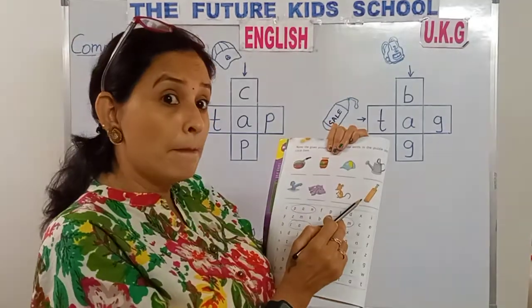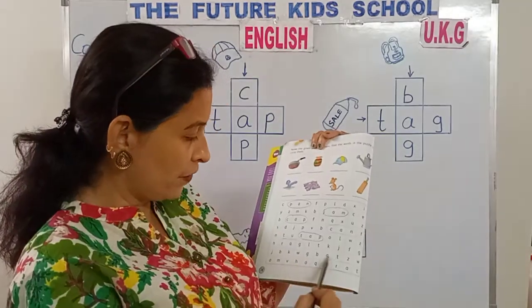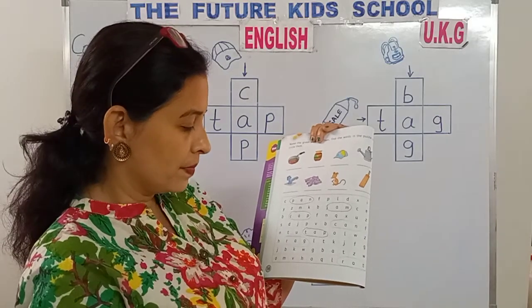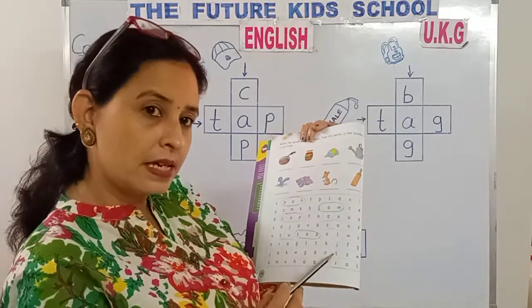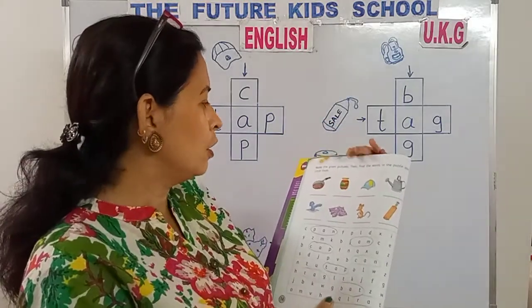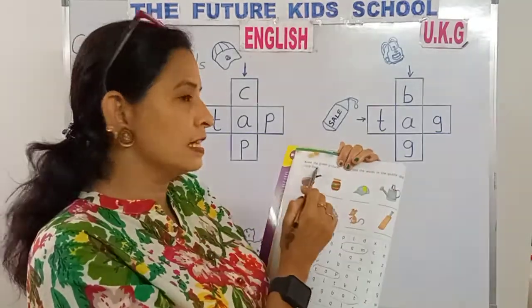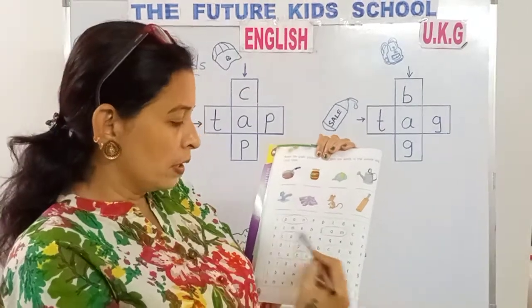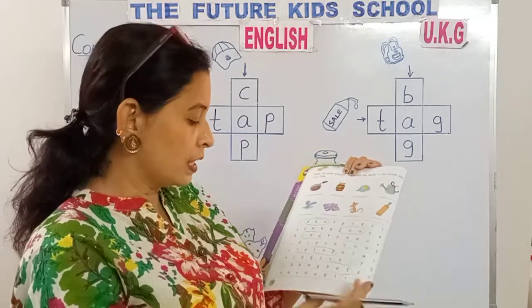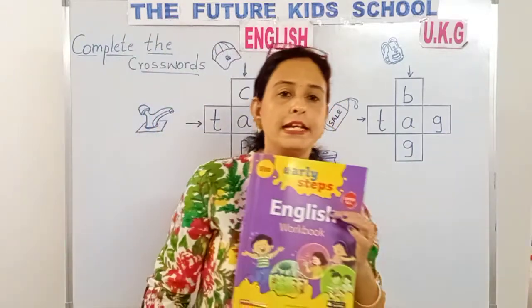This is a bat. B-A-T. Bat. Now look here — if we can find the word bat, look at the letters. Yes, here it is. B-A-T. Bat. Circle it. So, we need to name the given pictures, find the word in the puzzle, and circle them. We found the words in the puzzle and we circle them, children. Do this also for homework on page number 14 from your English workbook.